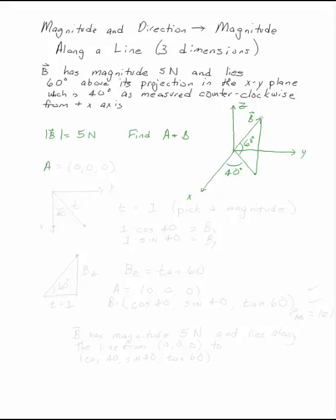So B lies along this line right here. The easiest point to pick along that line would be the origin. So that is point A. We need to find the Cartesian point somewhere along the line connecting the origin and the tip of B.